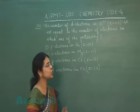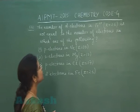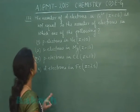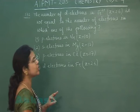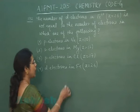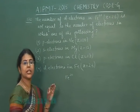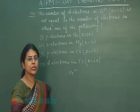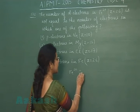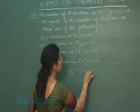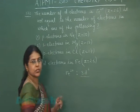Question number 172: The number of d-electrons in the Fe²⁺ ion is not equal to the number of electrons in which one of the following? First, we check how many d-electrons are present in Fe²⁺. Iron's atomic number is 26, and from its electronic configuration, the ferrous ion has 6 electrons in the d orbital.